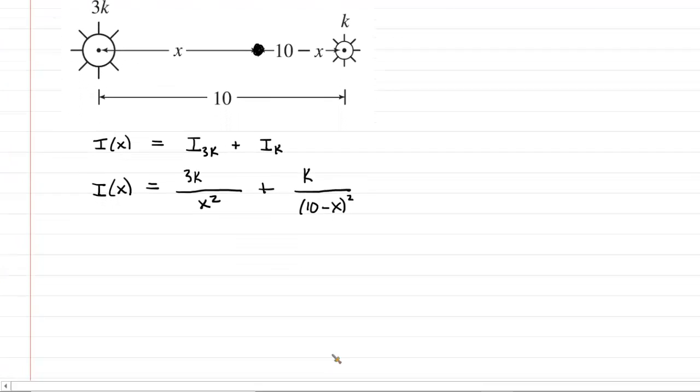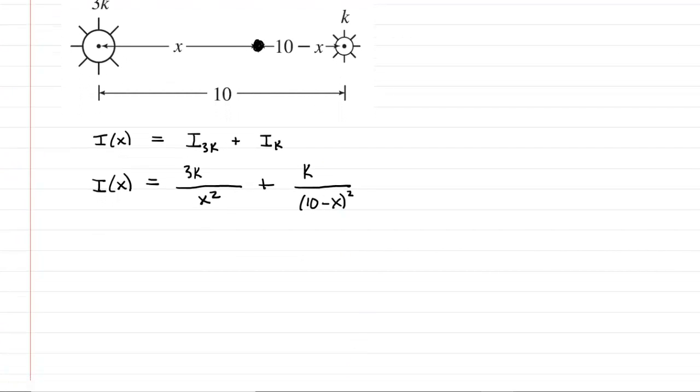And after establishing that, in order to find the minimum, what we need to do next is come up with the derivative of this illumination equation. But perhaps before doing that derivative, we might want to rewrite this. It makes taking the derivative just a little bit easier. So let's bring the X squared up here to the numerator and also the 10 minus X squared up to the numerator.